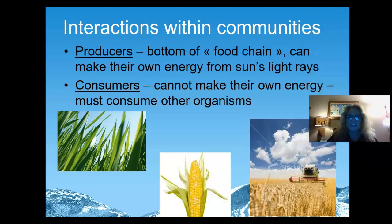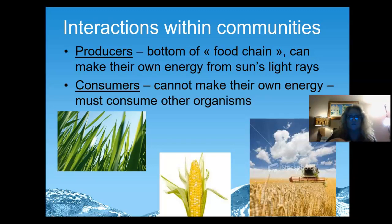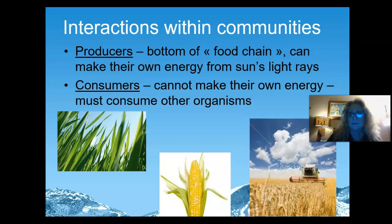When we talk about plants and animals and interactions, we've got two very basic types of organisms within a community. You have the plants, algae, and some bacteria that can photosynthesize — those are called producers. Anything that takes the sun's energy and converts it to chemical energy that other organisms use is called a producer. It's always at the bottom of the food chain because it takes energy from the sun — it doesn't have to consume other organisms.